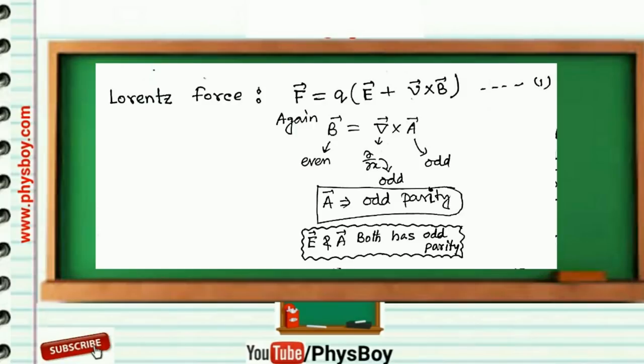So A⃗ must have odd parity. Finally, we get E⃗ and A⃗ both have odd parity, so option (b) is correct.